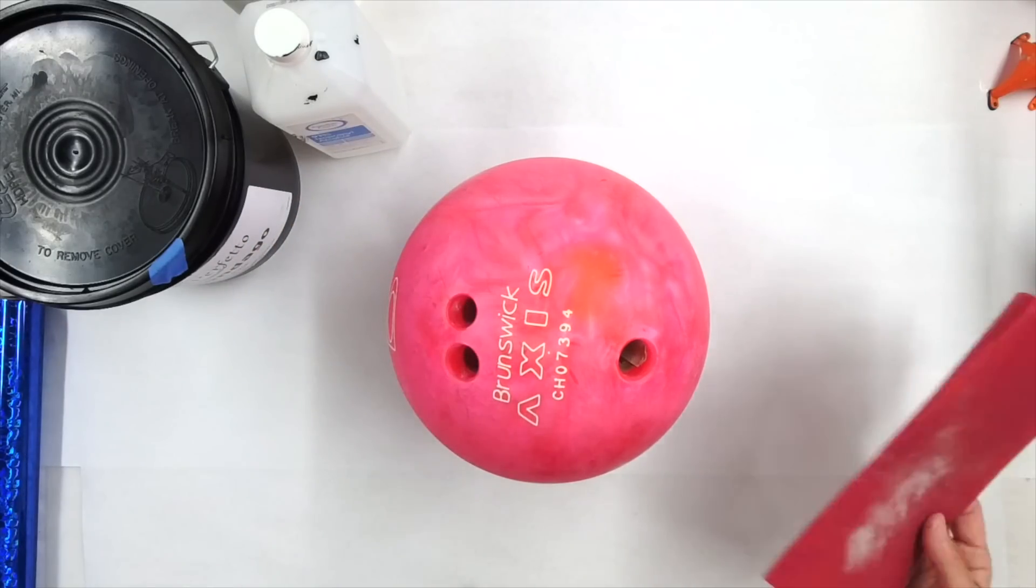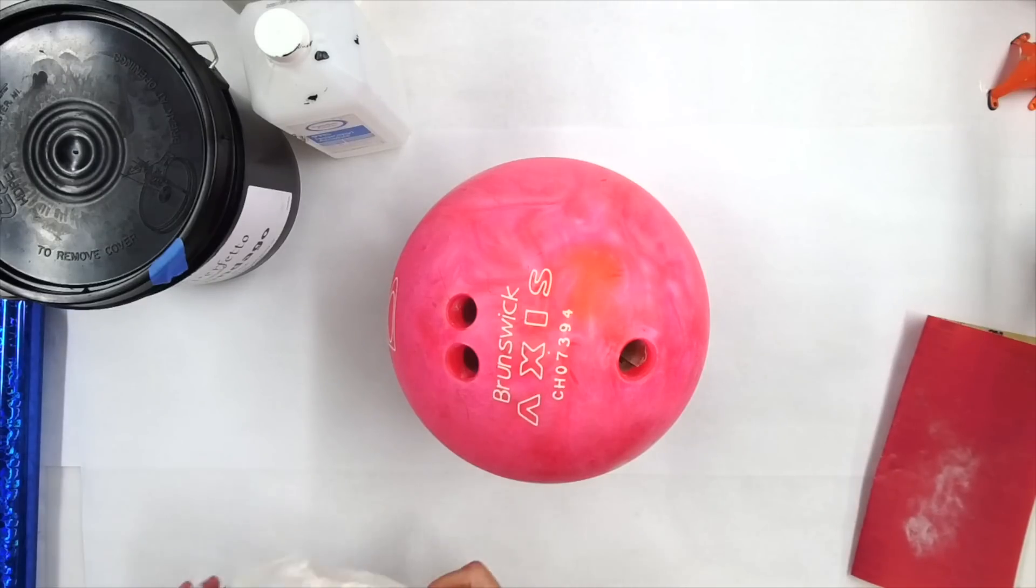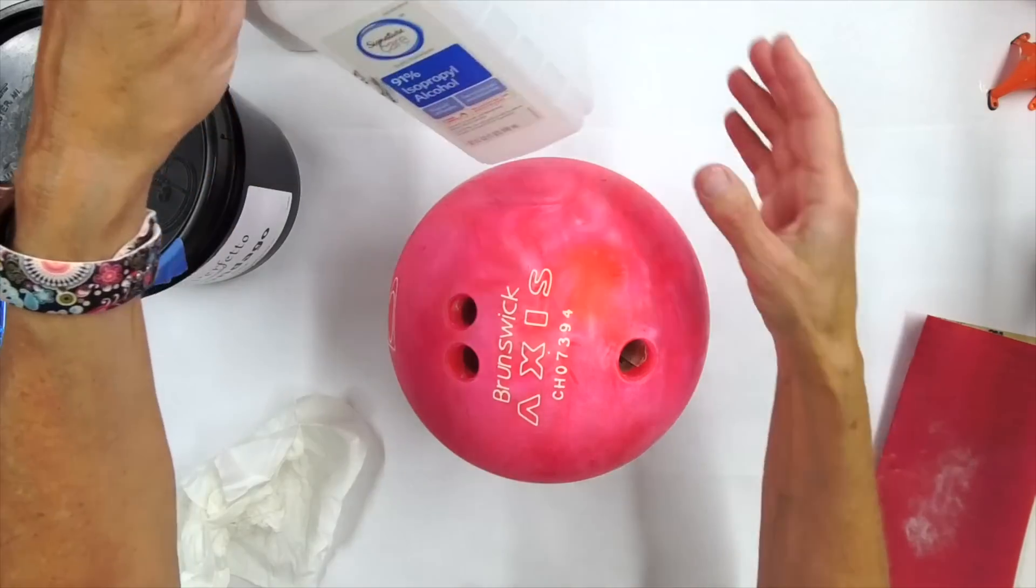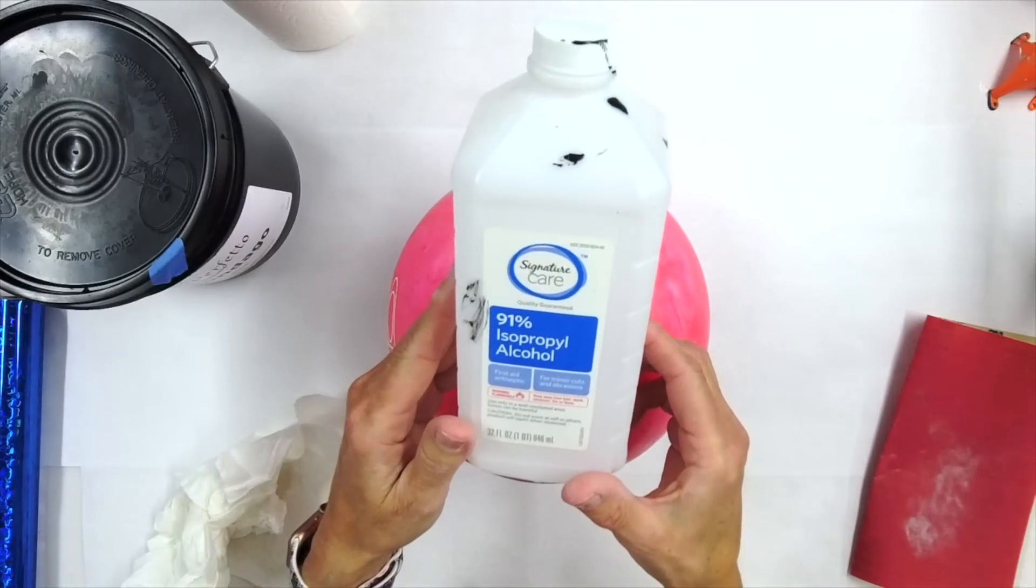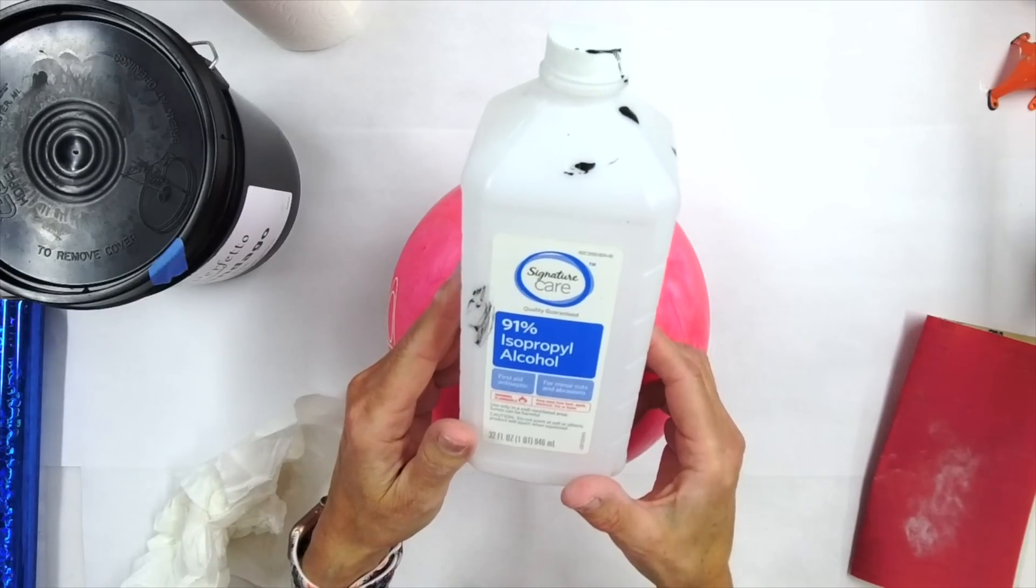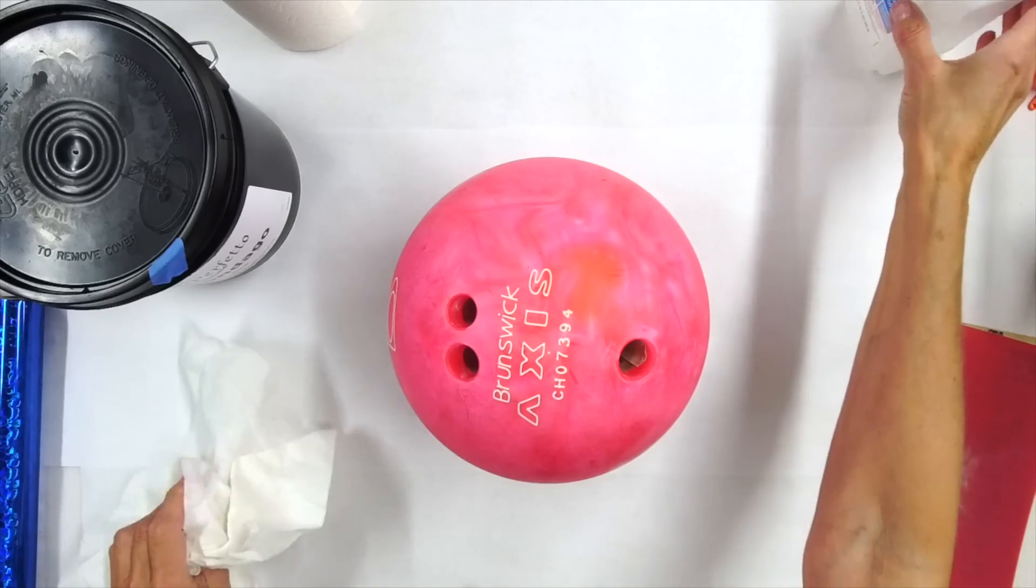A little dust in there. So once you do get this sanded down, just grab some 91% isopropyl alcohol and give it a super good cleaning.